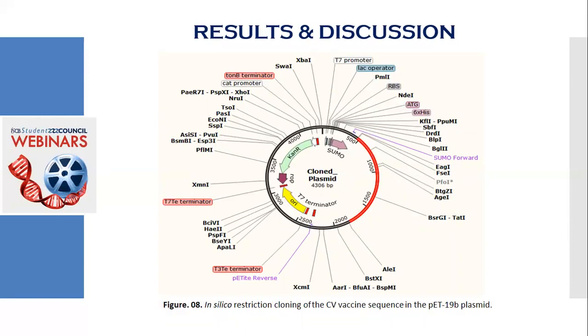For in silico cloning and plasmid construction, at first, the protein sequence of the CV vaccine was adapted by the JCat server. And then the codon adaptation index was found to be 0.903, which indicates that the DNA sequence contained a higher population of the codons that are most likely to be used in the target organism. I mean, the E. coli strain K12 that was used for the efficient production of the CV vaccine.